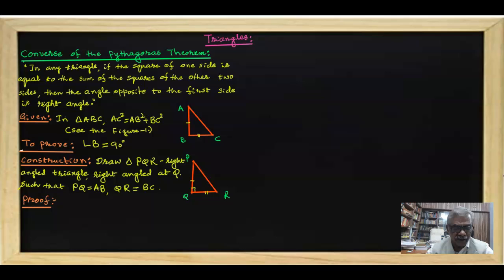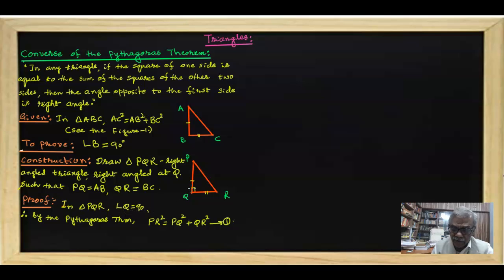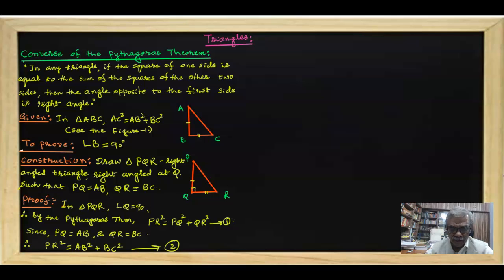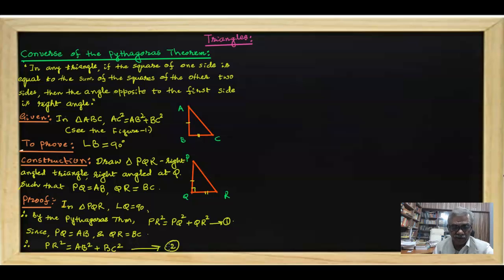Proof: In triangle PQR, since angle Q equals 90 degrees, by the Pythagorean theorem, PR squared equals PQ squared plus QR squared — let me call this equation number one. Since by construction PQ equals AB and QR equals BC, I will replace PQ and QR by AB and BC. Therefore, PR squared equals AB squared plus BC squared — let me call this equation number two.